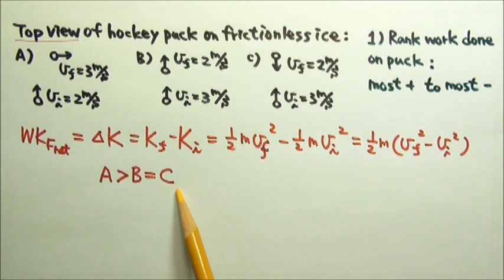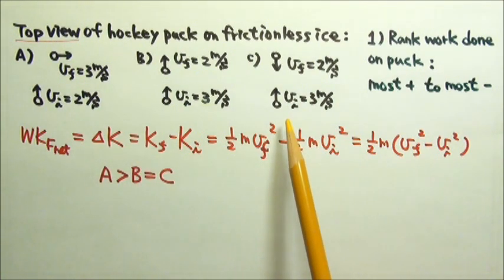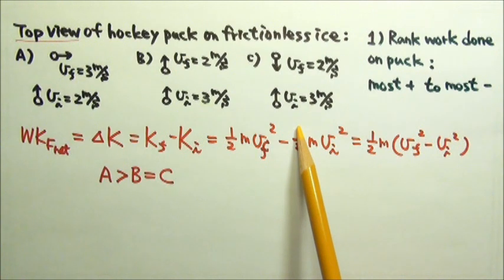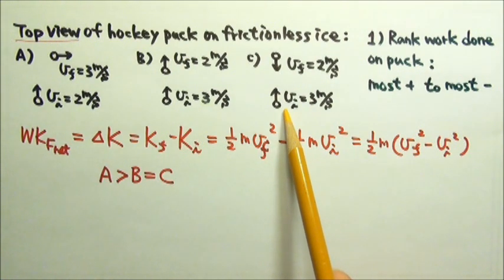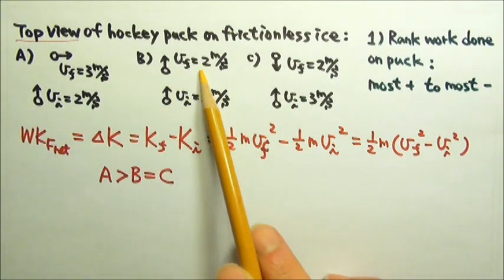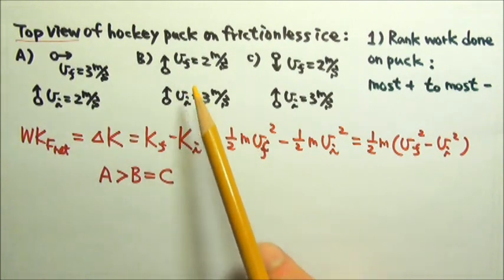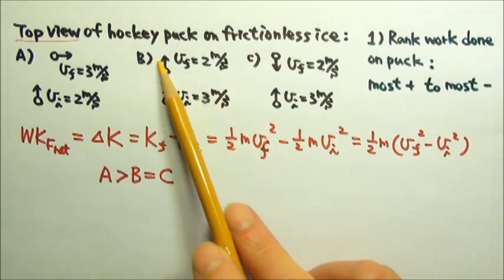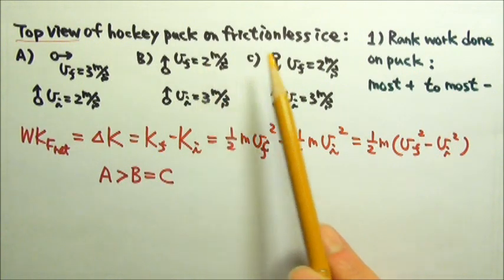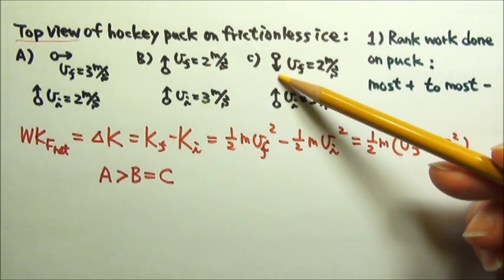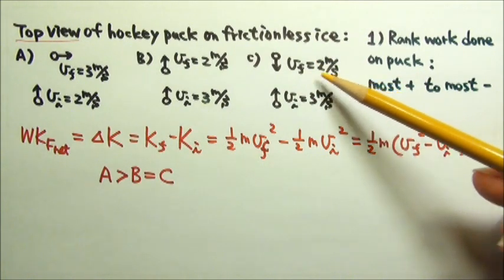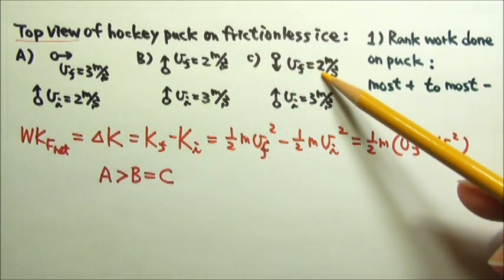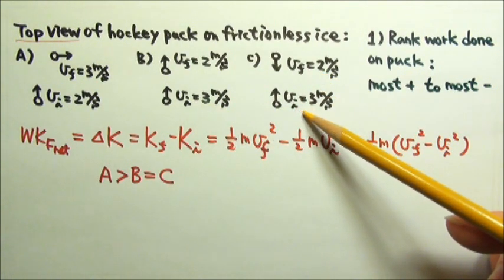It may seem weird that b and c involve the same amount of work, even though in c the puck has to turn around. Let's consider a simple one-dimensional process for c. At first, we can slow the puck down to 2 meters per second in the same direction, and that is the same as scenario b. Then we have to make the puck turn around. We can first slow it down to a stop, which means we have to take away all the puck's kinetic energy. But then we have to accelerate it in the opposite direction to 2 meters per second, giving the puck the same amount of kinetic energy back. So from this to that involves a net work of zero. Therefore, scenario b and c have the same work done on the puck.